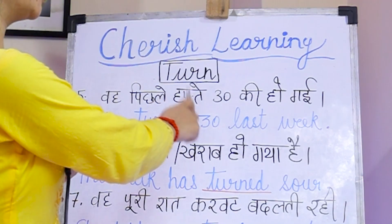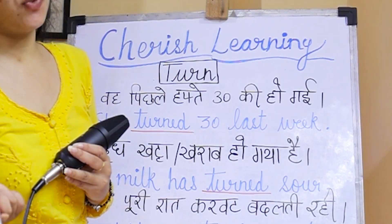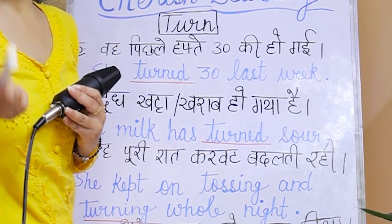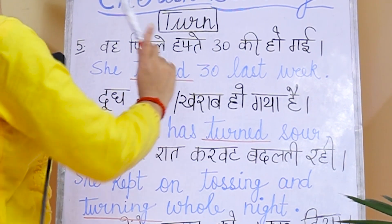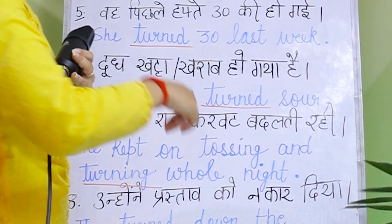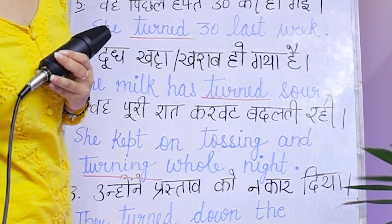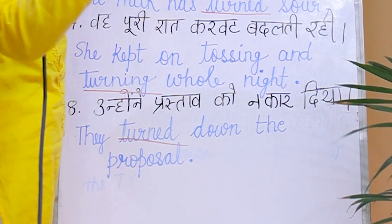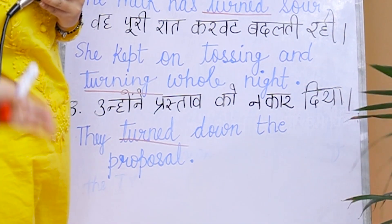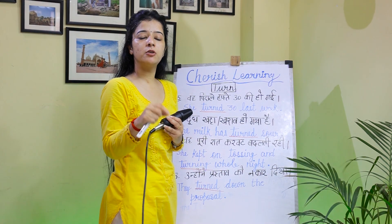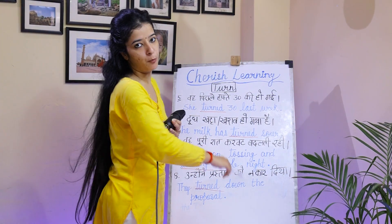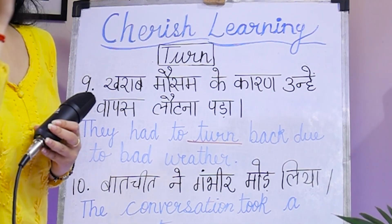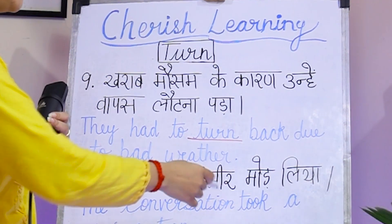Next sentence: 'They turned down the proposal.' Turned down is a phrasal verb meaning to reject something. Another sentence: 'You have to turn back due to bad weather.' Here, turn is used again.